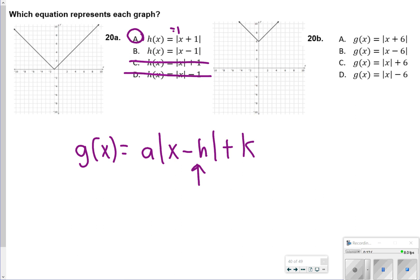For 20B, though, that is a K translation. And notice it's gone up 6. So we do need to choose C for that one. The first two, A and B, are talking about H. And letter D talks about K, but it's a negative 6 translation, and we did not move down. We moved up.